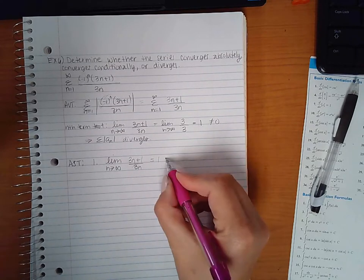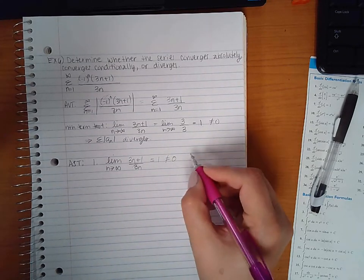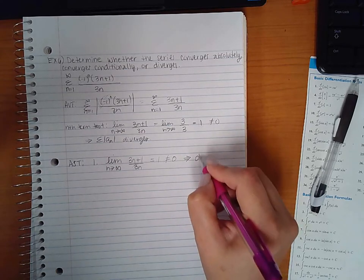So we already know it's going to be 1, which doesn't equal 0, which means it's going to diverge.